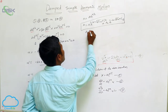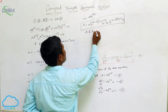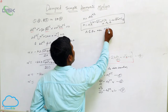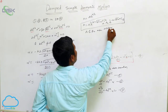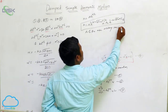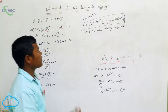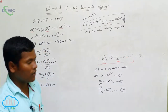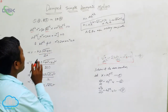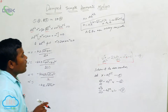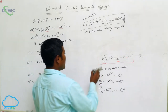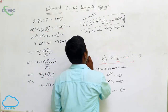Here A₁ and A₂ are arbitrary constants. Once you find them and substitute, you will get your answer. This is about the damped simple harmonic motion. There are some conditions that exist in this case.